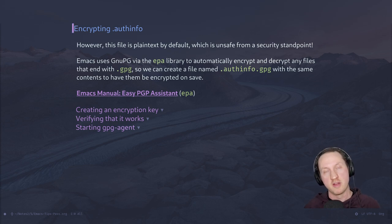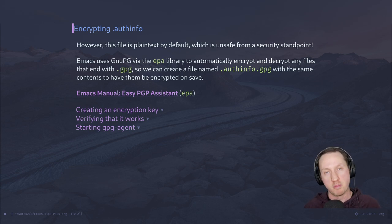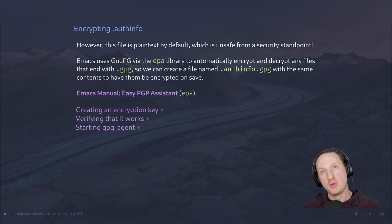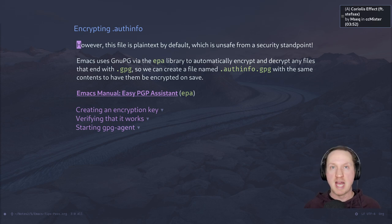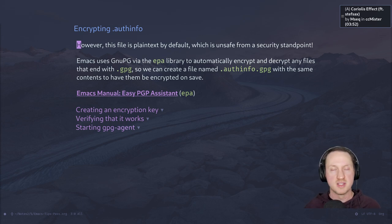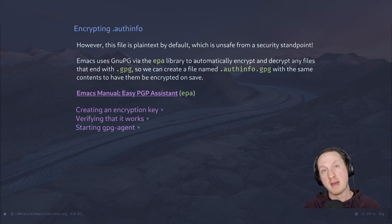Let's talk about how we can encrypt this .authinfo file, because that's the whole point — we want to make sure our passwords aren't sitting plain text on our machine. We're going to use the GNU PG program to create an encryption key for use with the EPA library inside Emacs. EPA stands for Easy PGP Assistant — it's a library that interfaces with GNU PG to handle listing keys, encrypting and decrypting files, and more. It gets used implicitly by the auth-sources library.